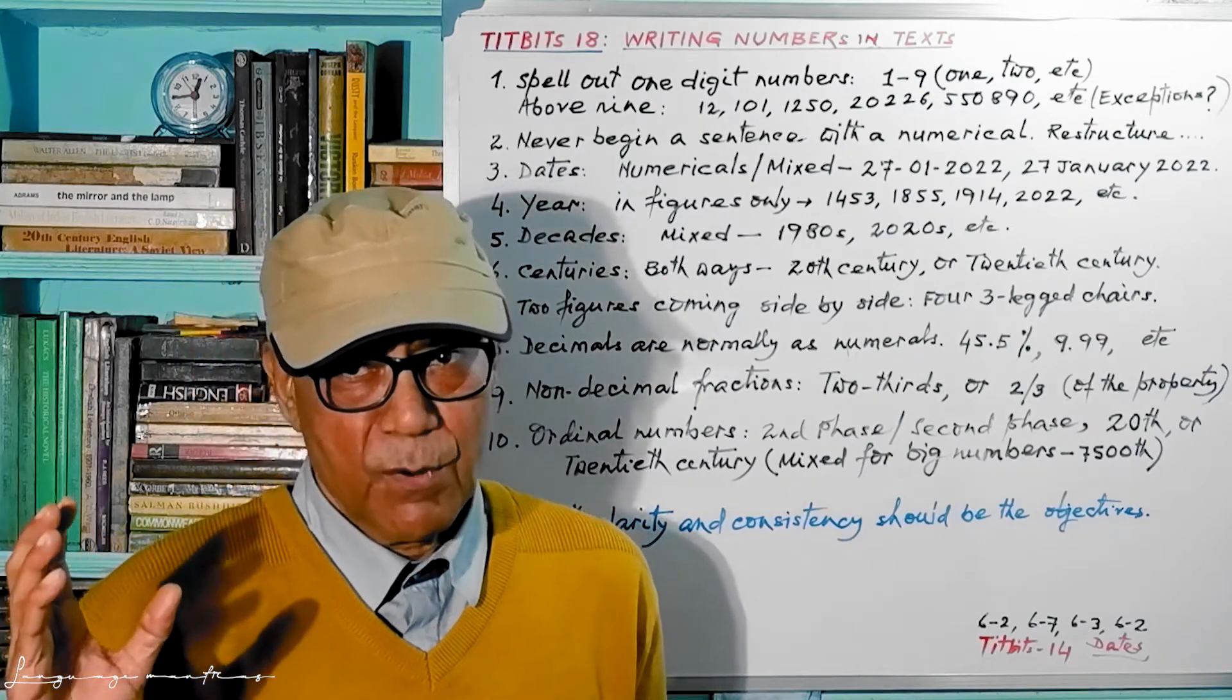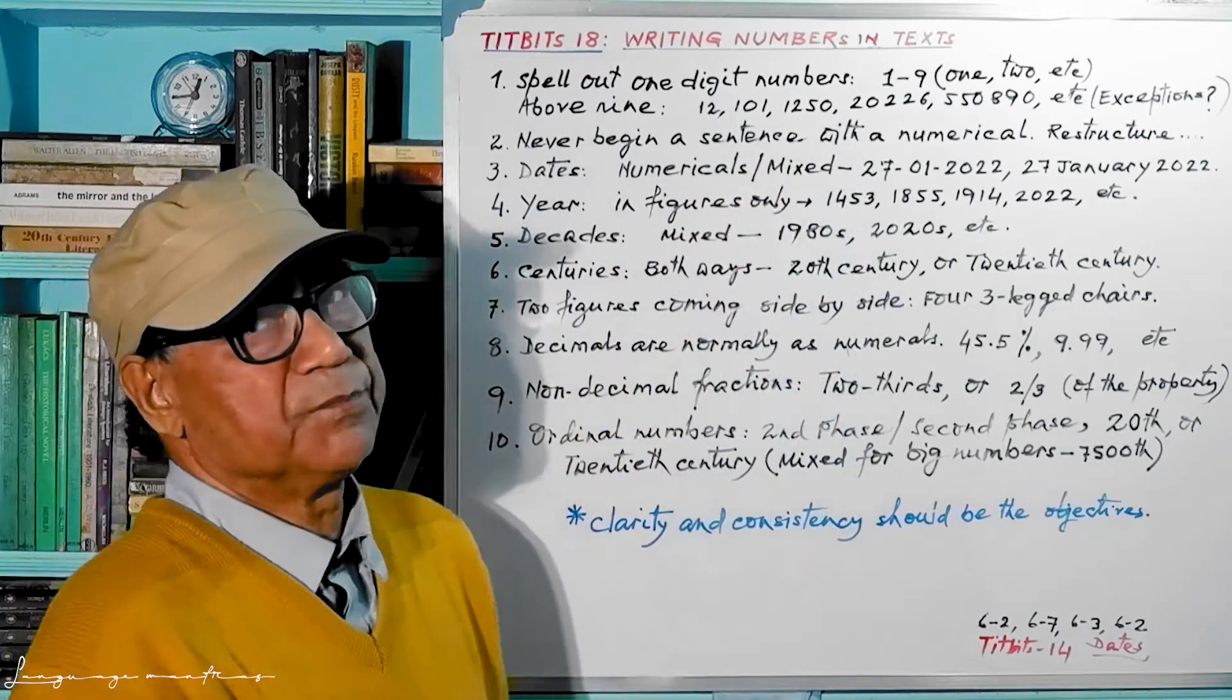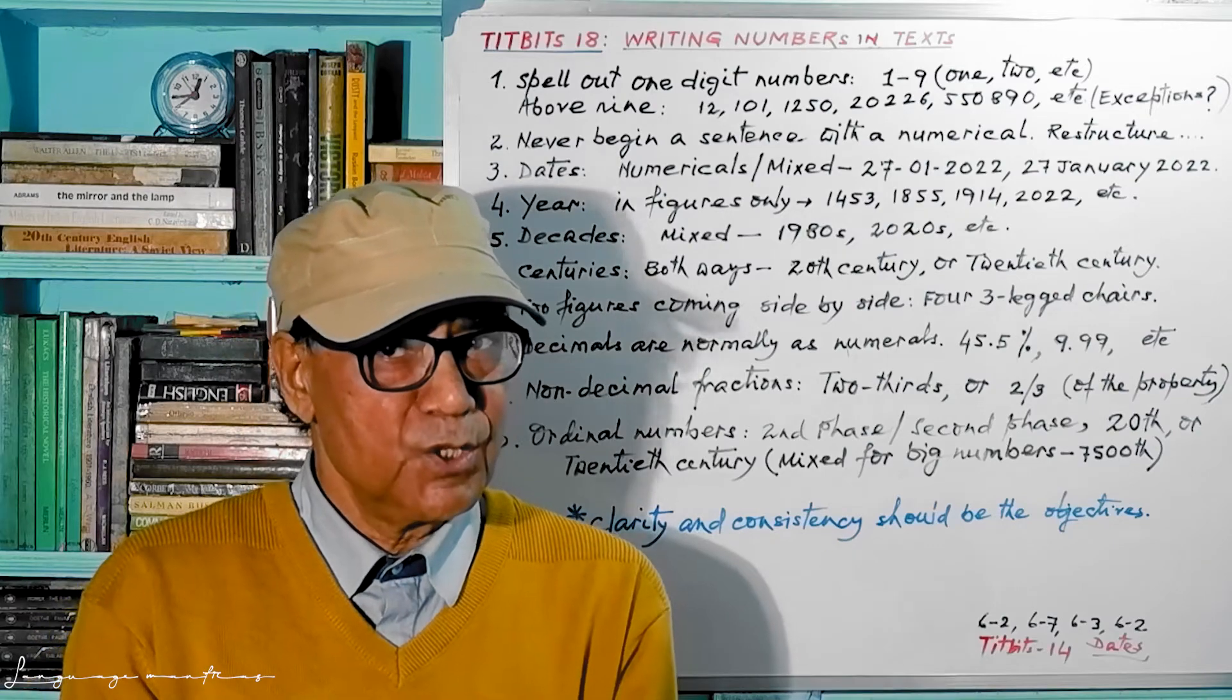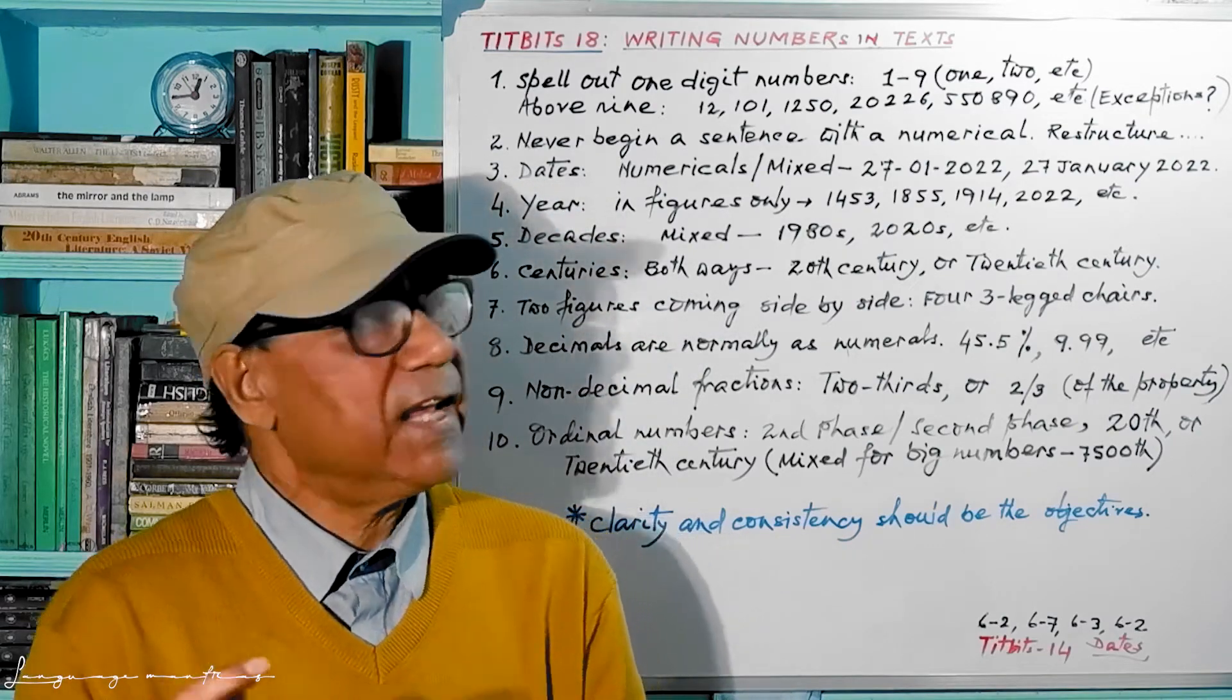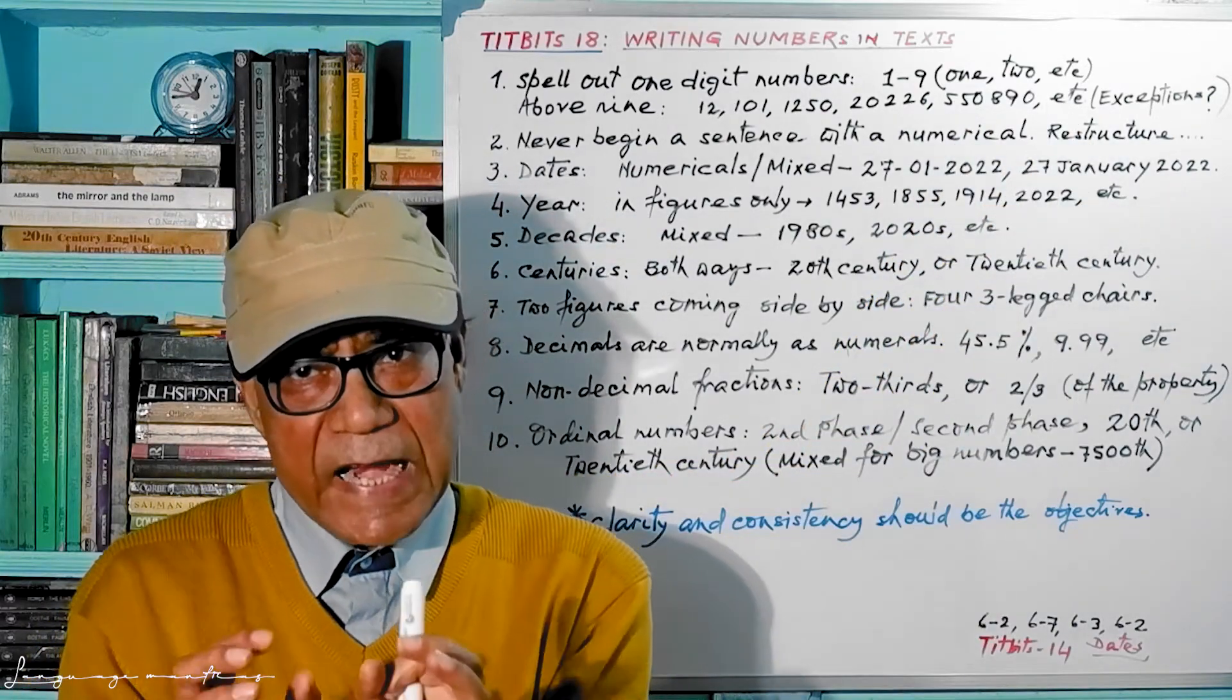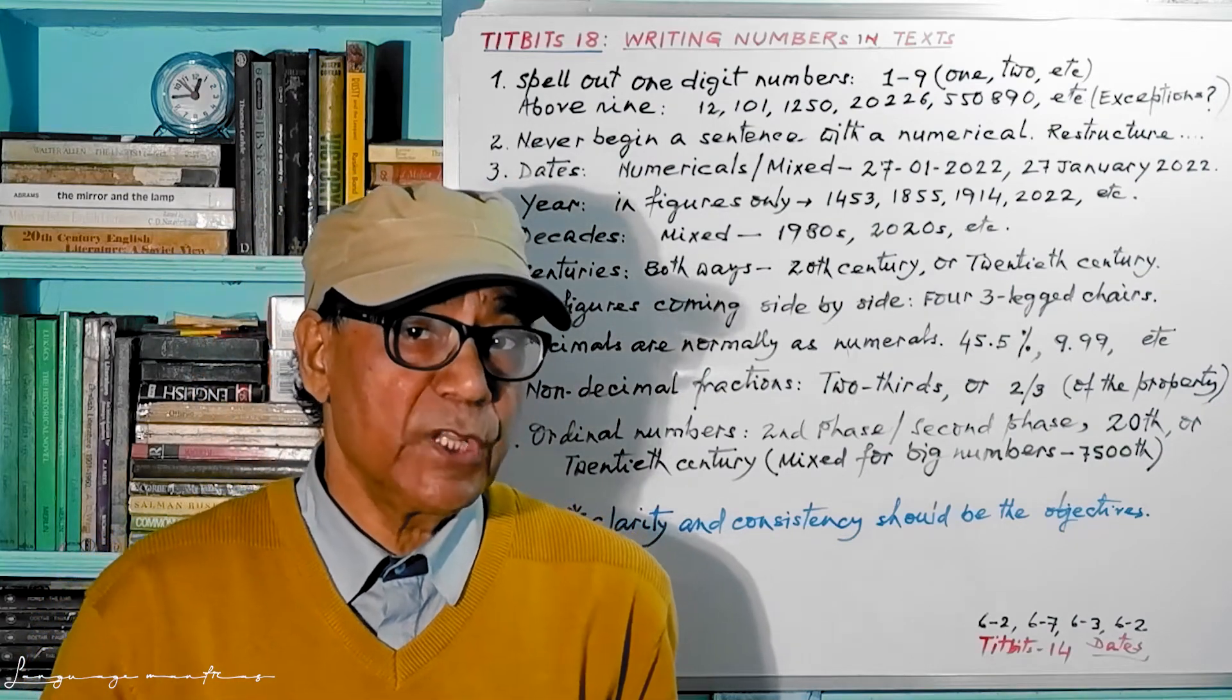So let's start. Number one: spell out one-digit numbers. Spell out means write in words. One-digit number: one, two, nine. This is one-digit number like O-N-E, 1, T-W-O, 2, etc. You have to write in words if it is one-digit number.